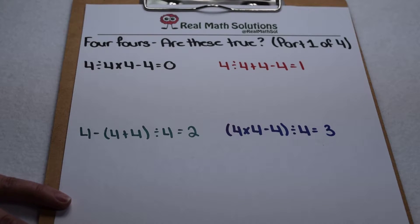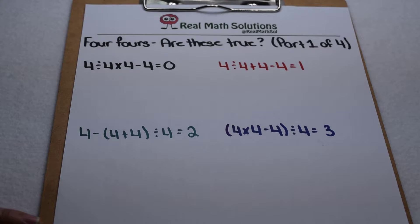We've seen a post on social media where you can combine four fours using different operations and come out with the results of zero through twelve. We're going to test them out to see if it's true, but we've broken them up into smaller groups. First we're going to test zero through three.